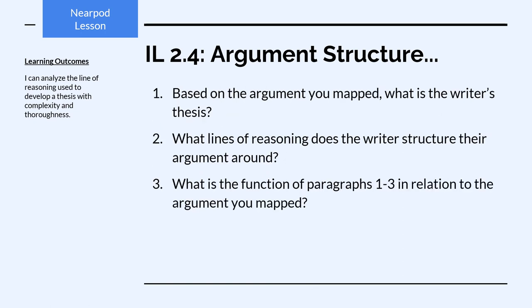Number one: based on the argument you mapped, what is the writer's thesis? We look at the primary claim and combine it with the two premises for the lines of reasoning. Something like: 'Punishing nonviolent crimes with public shame is misguided because shame does not foster constructive change — it's guilt that does foster constructive change.' Number two: what lines of reasoning does the writer structure the argument around? The two lines of reasoning are that shame does not foster constructive change because of all the negative focus on self, and that guilt does foster constructive change because it pushes the negative focus on the action rather than the self.